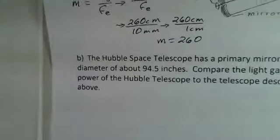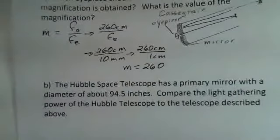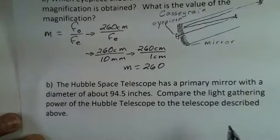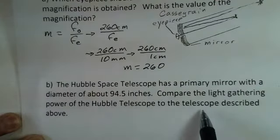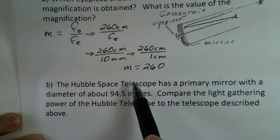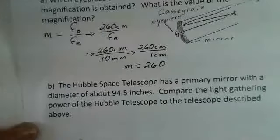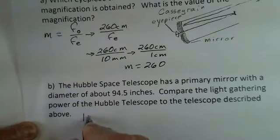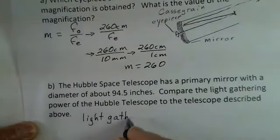The Hubble telescope has a primary mirror with a diameter of about 94.5 inches. How much light does Hubble gather compared to this telescope that's fairly common for amateur astronomers, with a diameter of 28 centimeters? Light gathering power is based on the area of the objective.